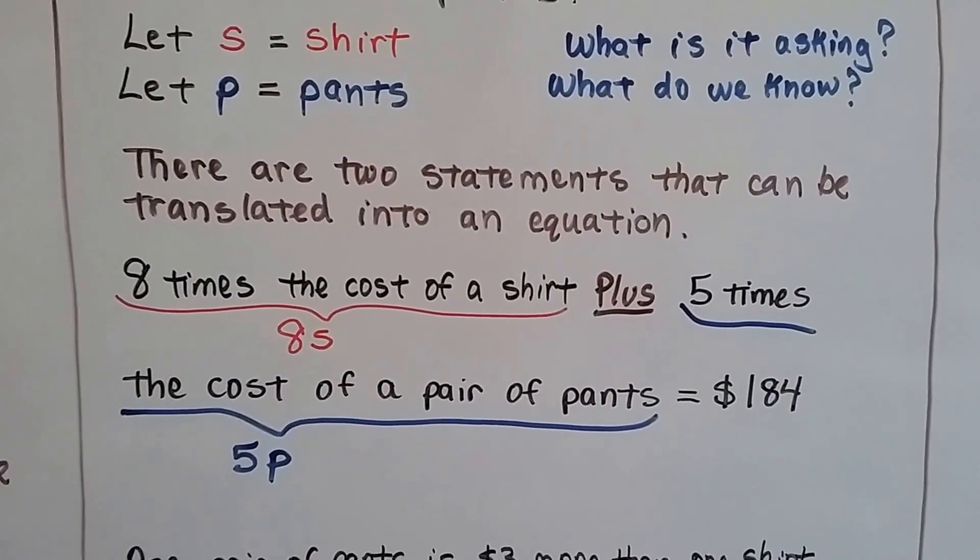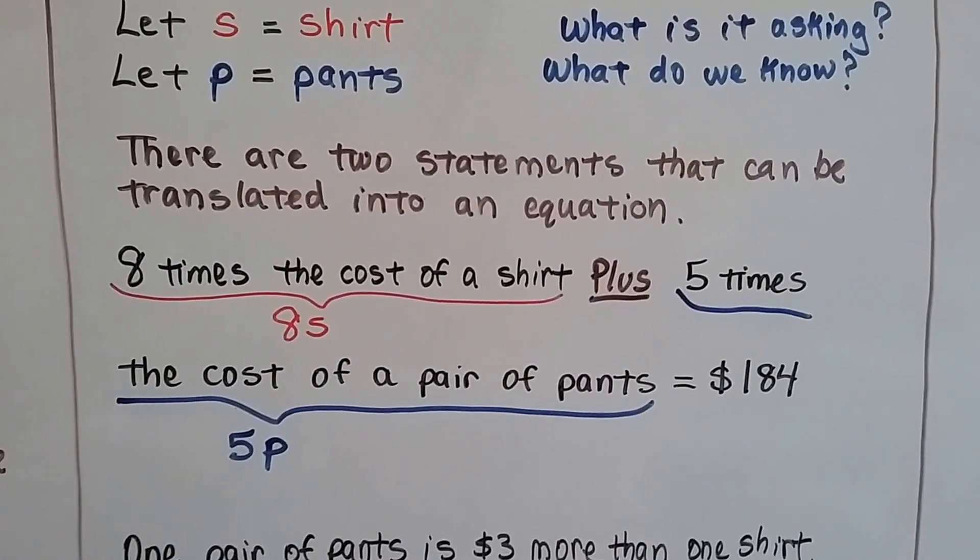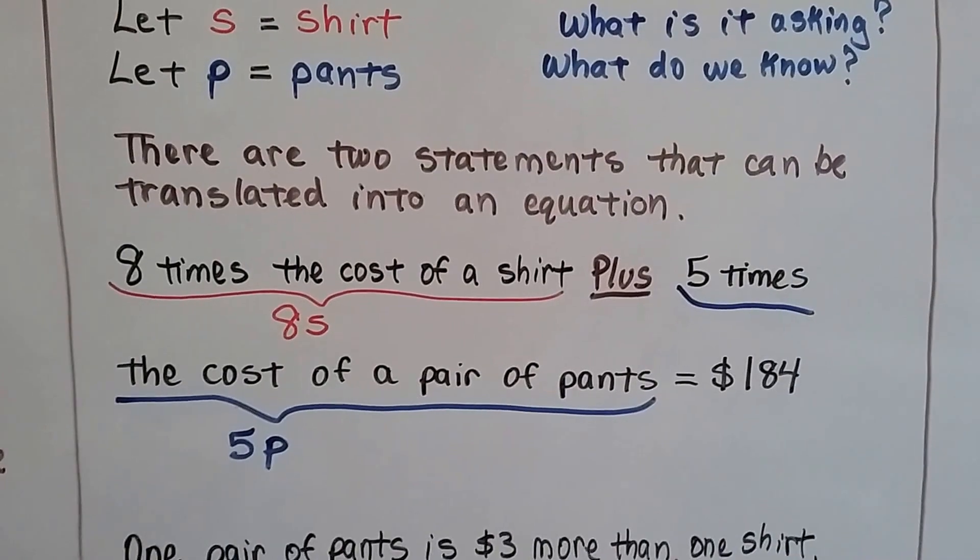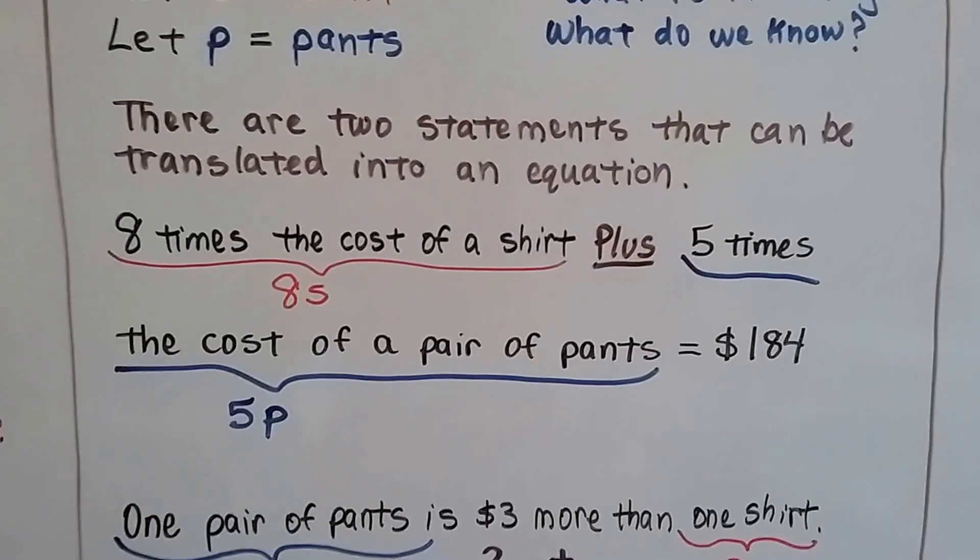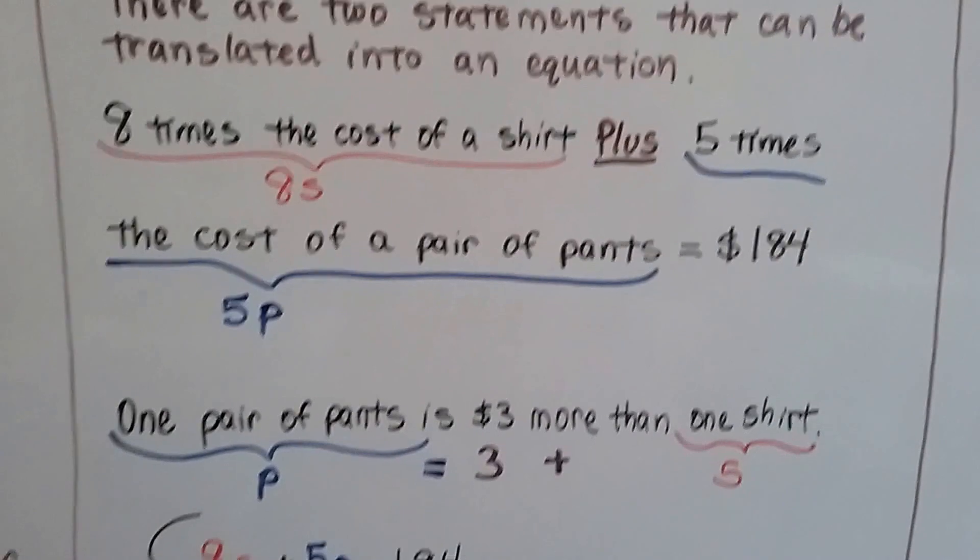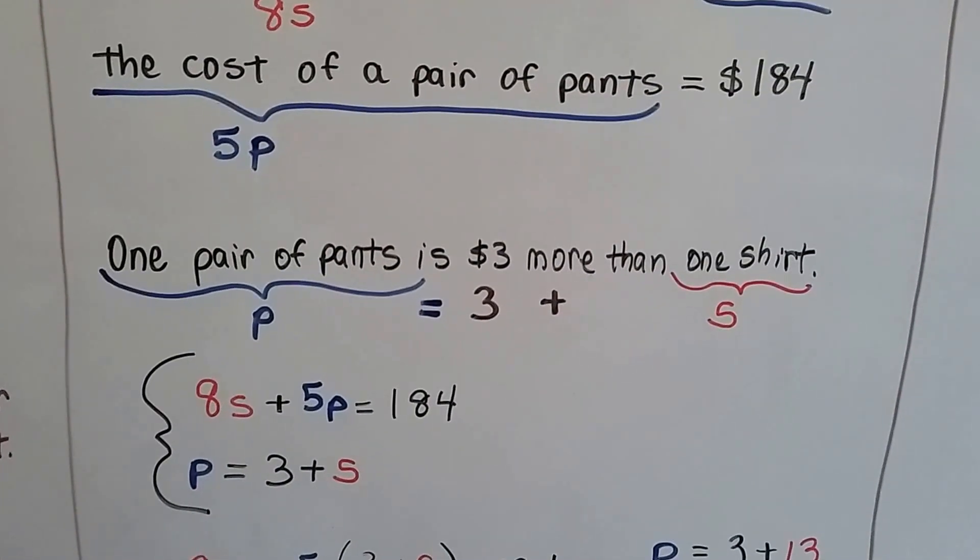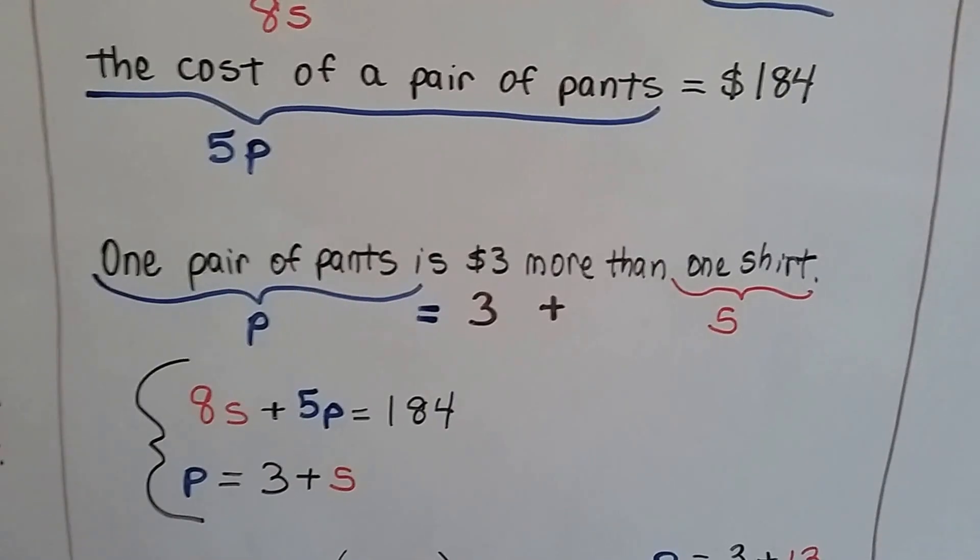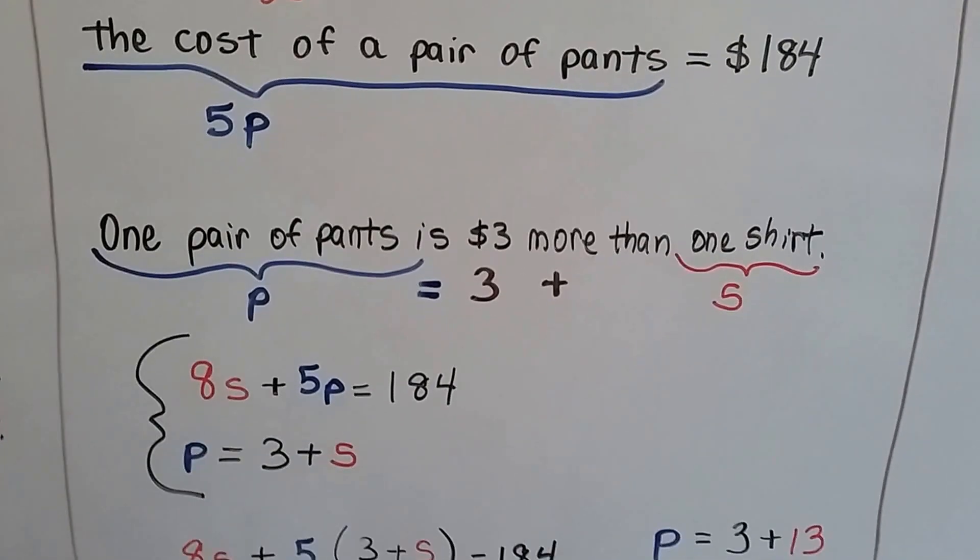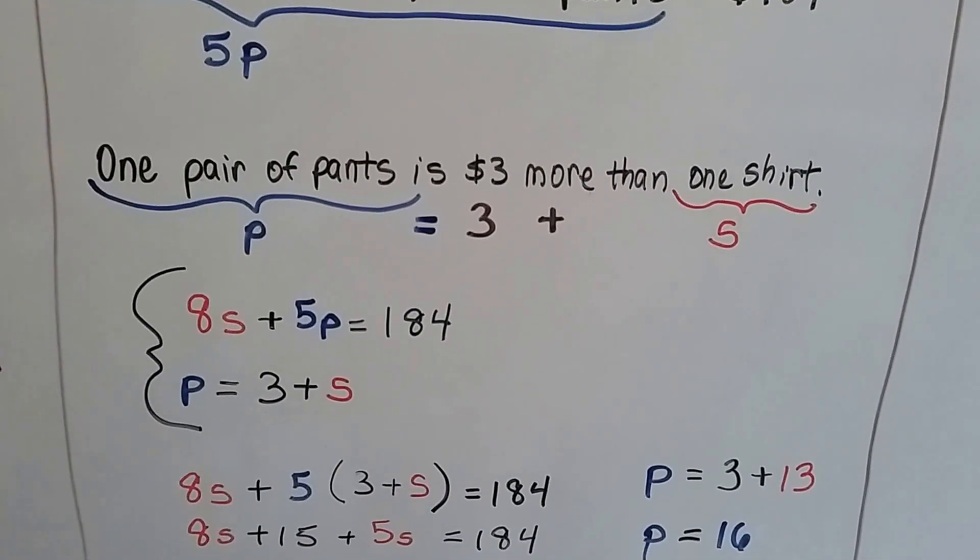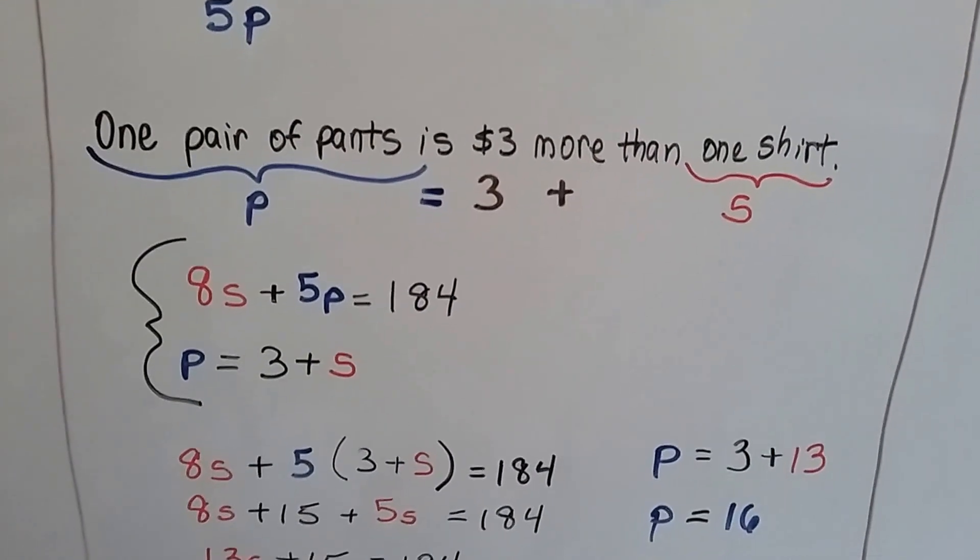There's two statements that can be translated into an equation. We have eight times the cost of a shirt, that's 8S, plus five times the cost of a pair of pants, that's 5P. It's going to equal $184. We also know that one pair of pants, P, is $3 more, that's three plus one shirt, S. So, now we have our two equations. 8S plus 5P equals 184 and P equals 3 plus S.